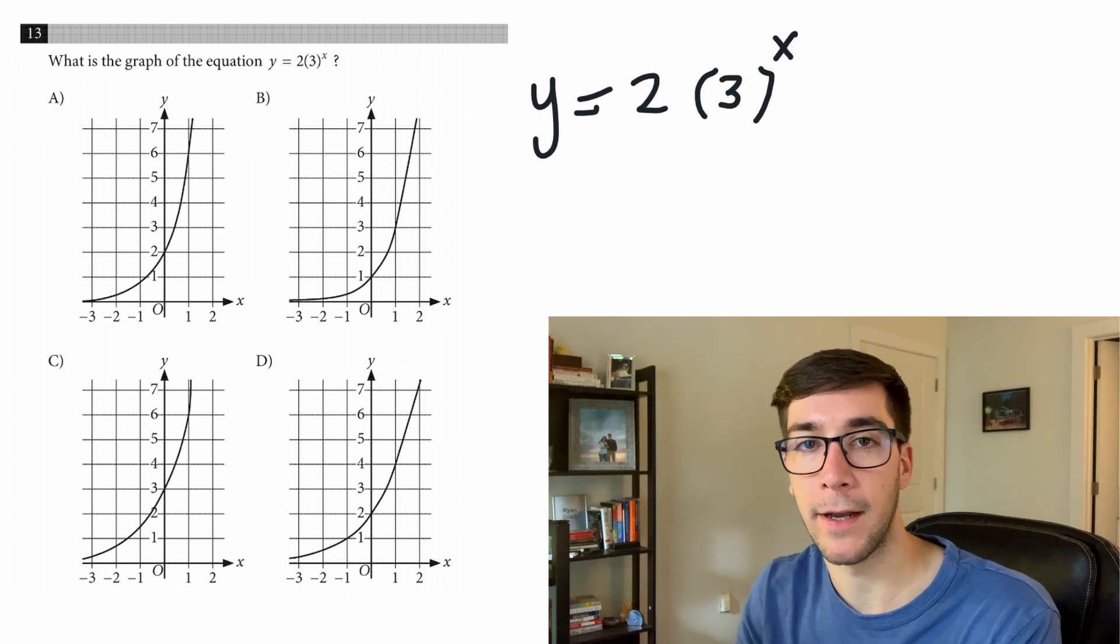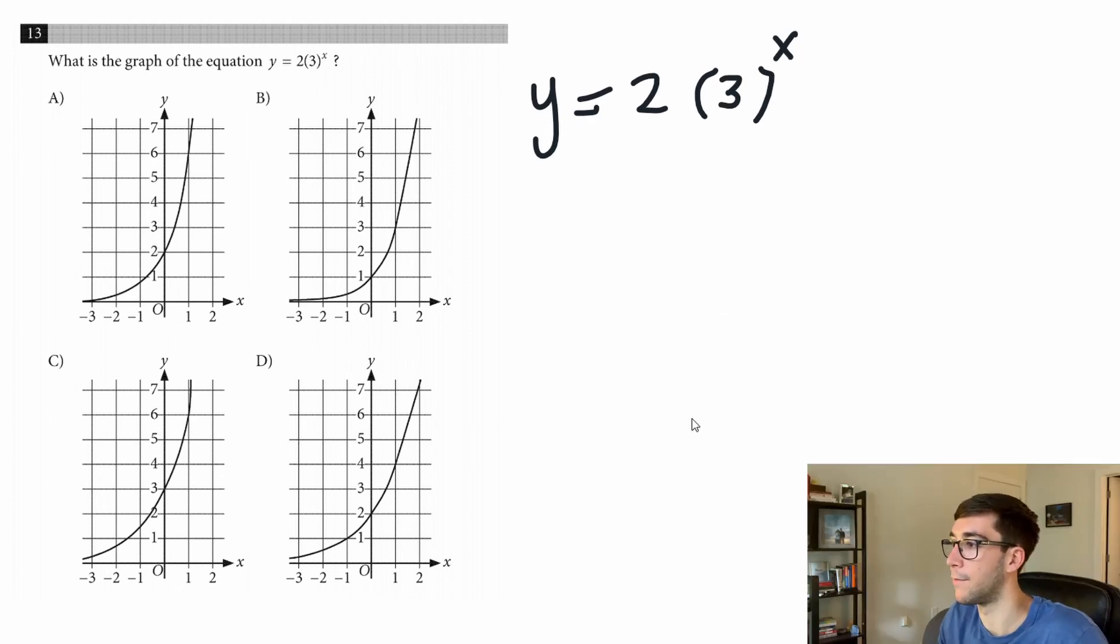Here's how to graph exponential functions on the SAT. This question is asking us to graph the function y equals 2 times 3 to the x. We know it's an exponential function because the x is up here in the power. This number here, the number that's not attached to the x, is the y-intercept, meaning this point's going to be on zero. So we have the point (0,2).